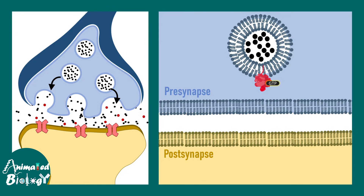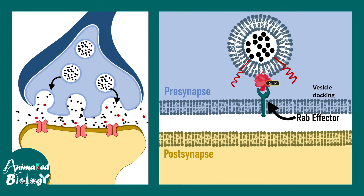First, these vesicles have GTP-bound RAB — RAB-GTP helps in the docking process and ensures that the vesicle binds to the presynaptic membrane and not to a random part of the membrane. RAB effector and RAB interactions are really important in this context. This is the vesicle docking event. Eventually, the V-SNAREs present in synaptic vesicles — also known as VAMPs in the context of the synapse — are ready to interact with the T-SNAREs.